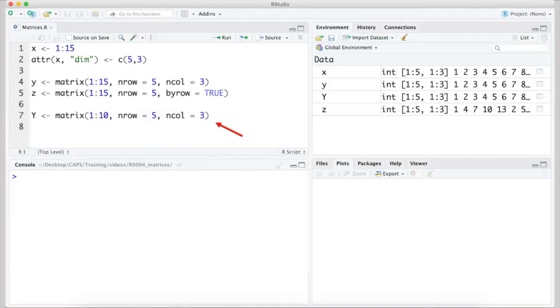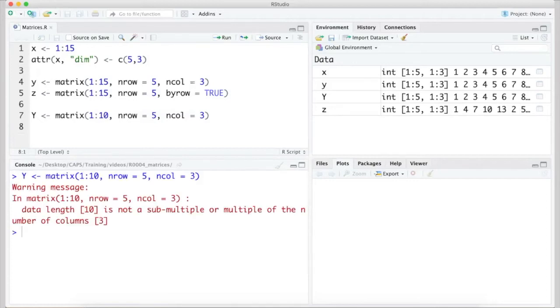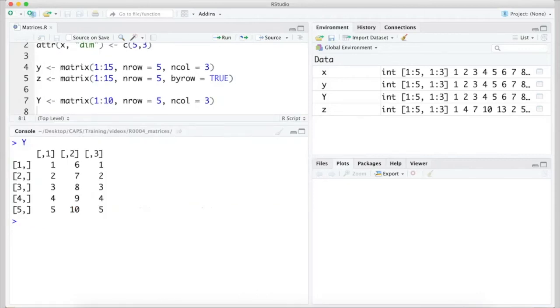If we rerun the matrix function as we did originally, but we change the range of values from 1 to 15 to 1 to 10, we get a warning message that the data length is not a multiple of the number of columns. Notice I've named this object capital Y instead of the previous lowercase y. It's a good opportunity to point out that case does matter with object names, so these are stored as two separate objects. Like I mentioned in a previous video, since this is a warning message and not an error, R did run the code, even though it has some doubts that the result is what we intended. If we take a look at that new matrix, we see that the first two columns were filled with the values 1 through 10, and then R was out of values to fill the third column, and so it went back and reused, or recycled, the values 1 through 5 to fill the matrix.